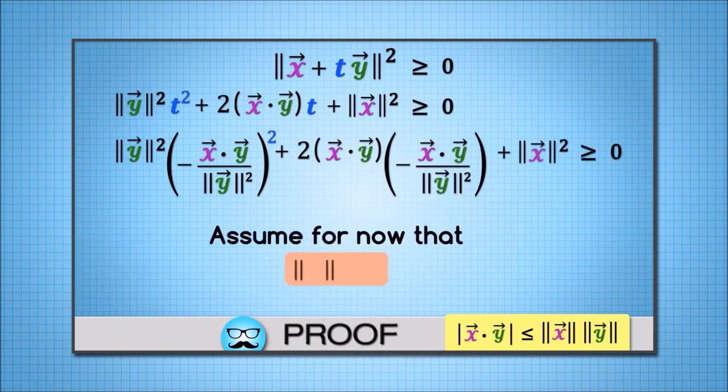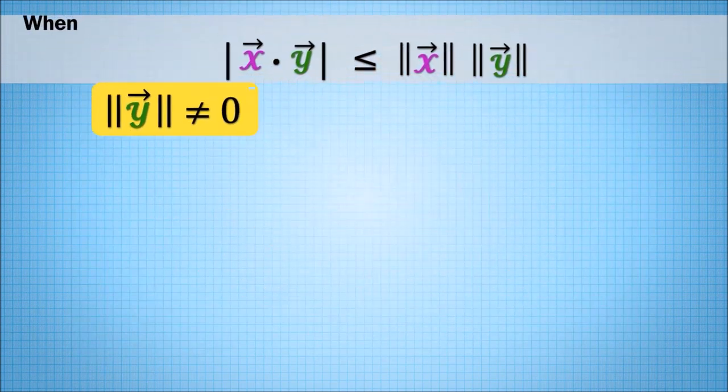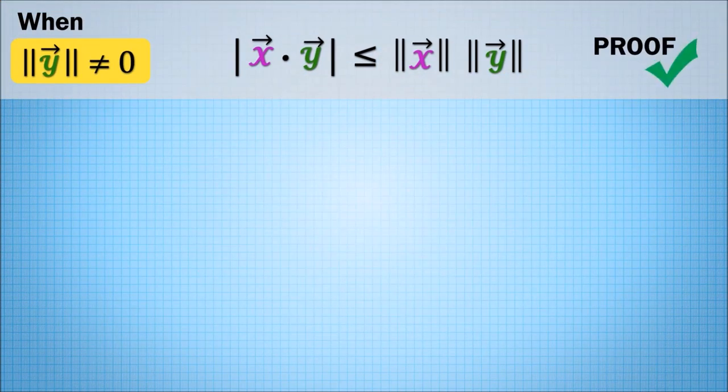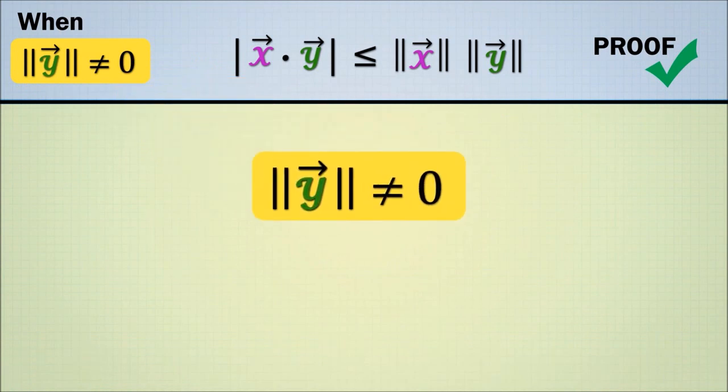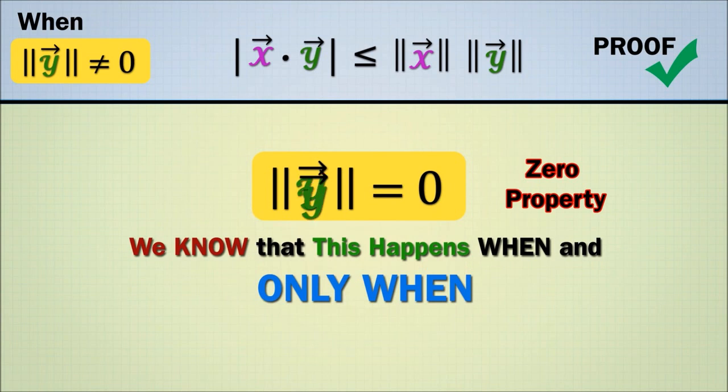Assume for now the norm of y is non-zero. But it is indeed possible for norm of y to equal zero. Namely, by the zero property, we know that this happens when and only when y is the zero vector.